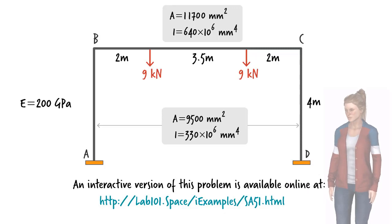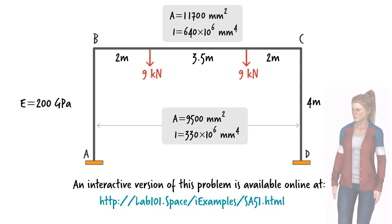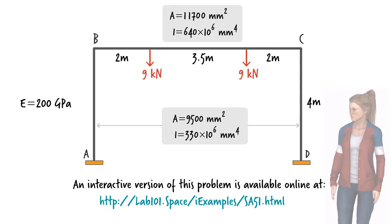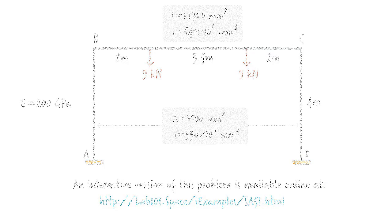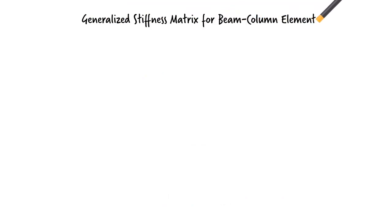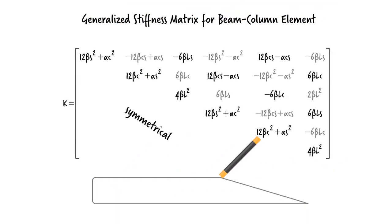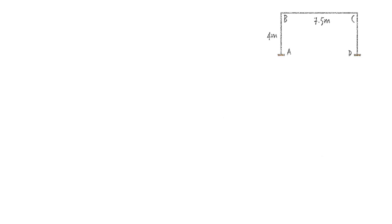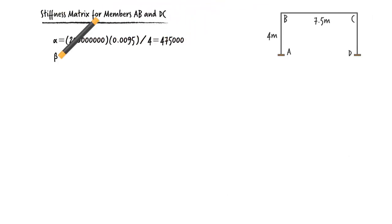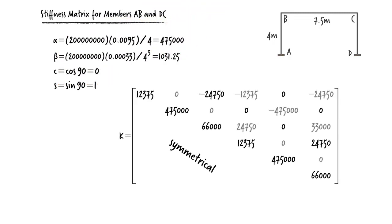To analyze the frame, we start by writing the stiffness matrix for each member. Since AB and DC have the same length and section and material properties, they share the same stiffness matrix. Here is our beam column stiffness matrix in parametric form. Here are the parameters for the columns, which, when substituted in the generalized matrix, give us the member stiffness matrix.